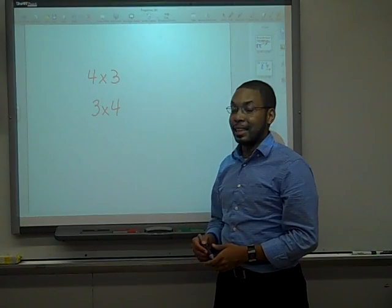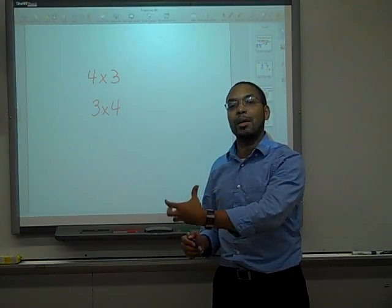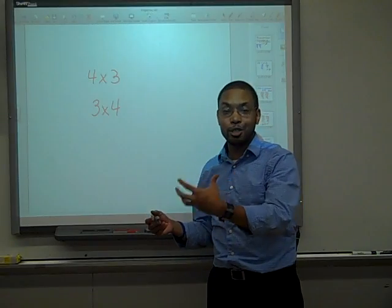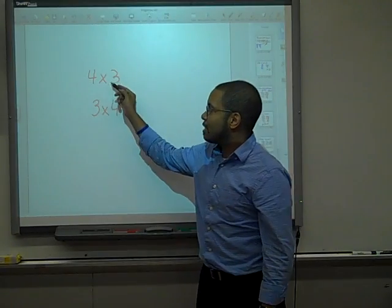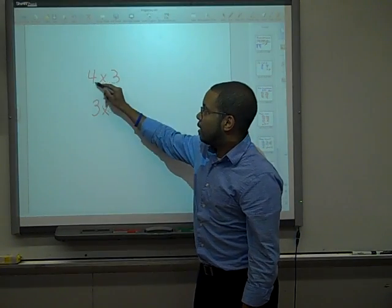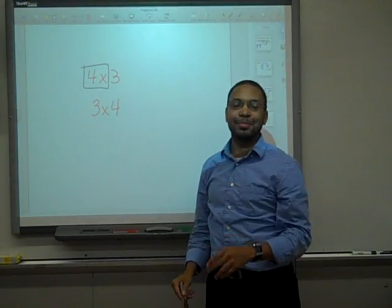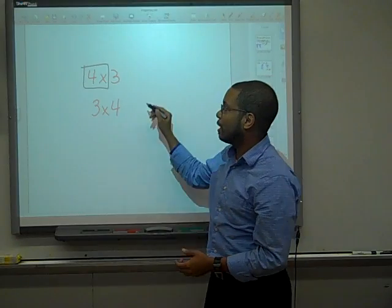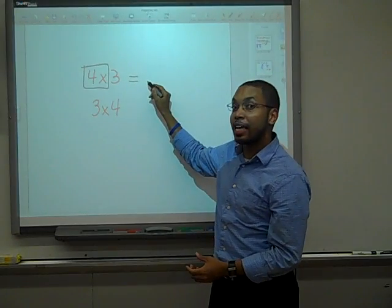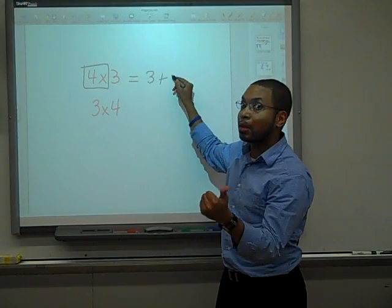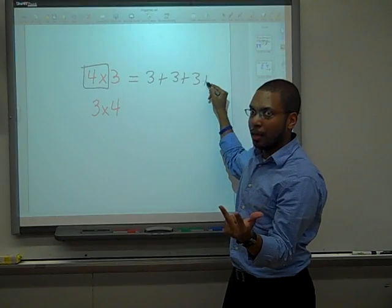Well, let's look at that and let's see why we say what we say when we actually do multiplication. 4 times 3 should mean that we should add 3, 4 times. That's why we say 4 times 3. So, 4 times 3 really equals 3 plus 3 plus 3 plus 3.